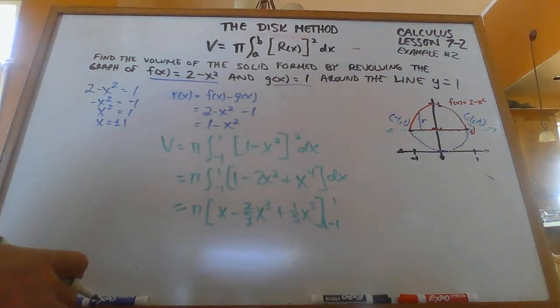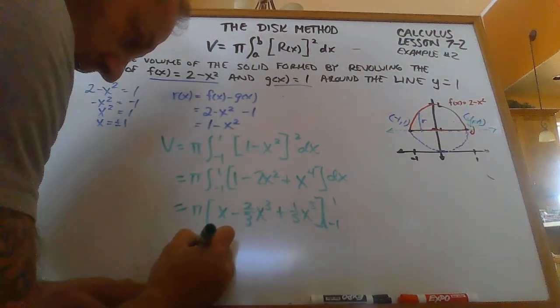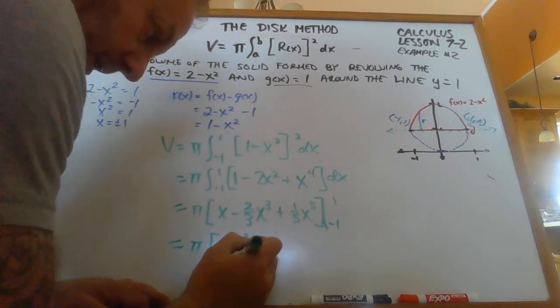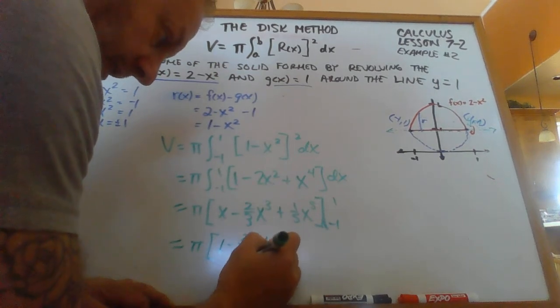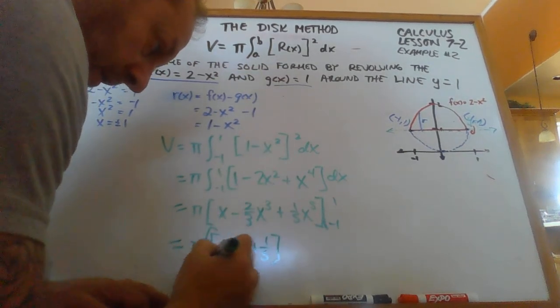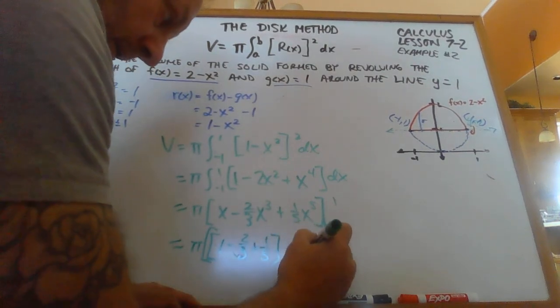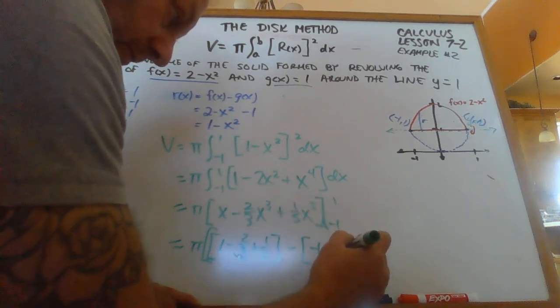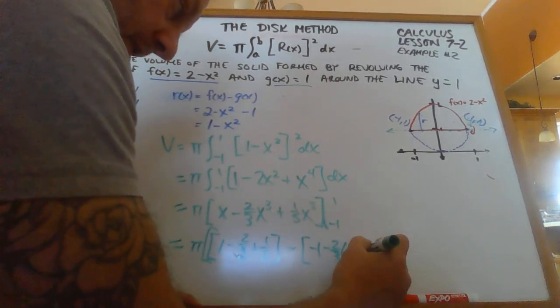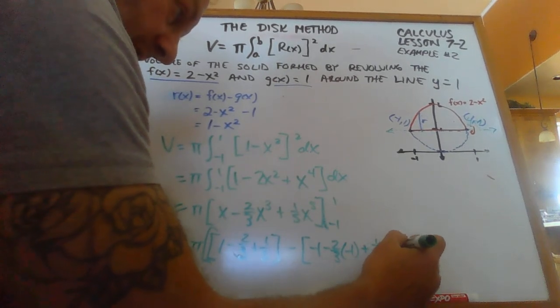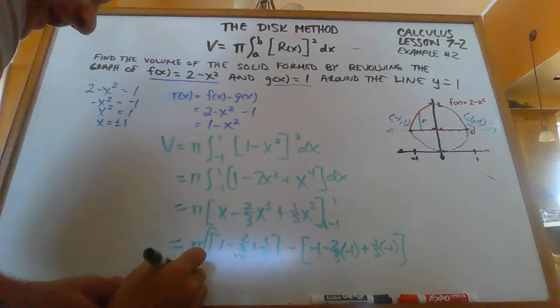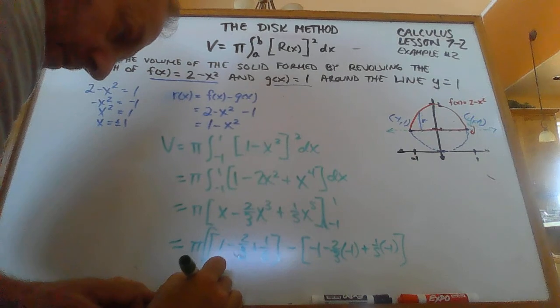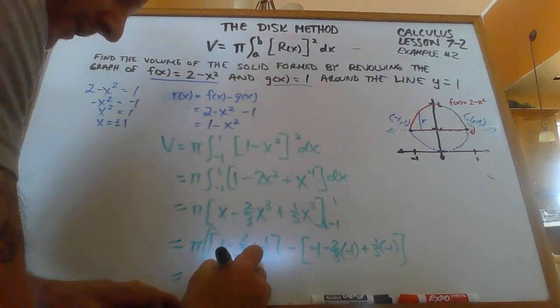So I go ahead and I plug in 1, and I get 1 minus 2 thirds plus 1 5th. Minus negative 1 minus 2 thirds. Negative 1 cubed is also going to be negative 1 plus 1 5th times negative 1. And that all comes out, that boils down to 16 pi over 15. And that's in cubic units again.